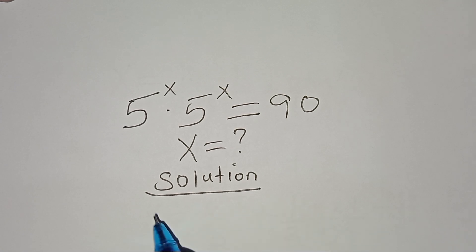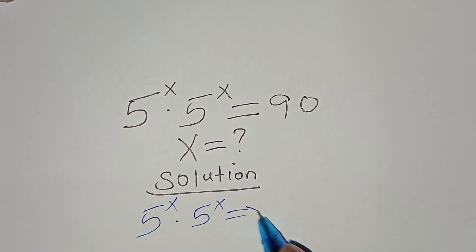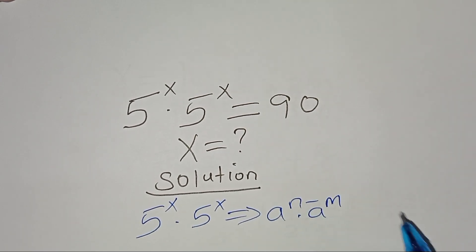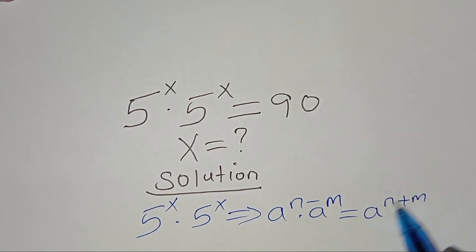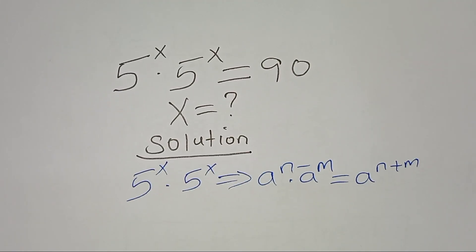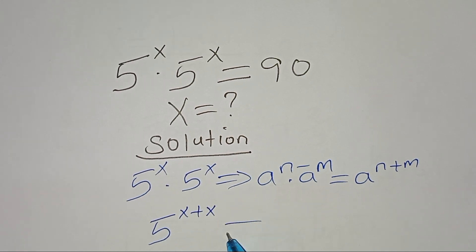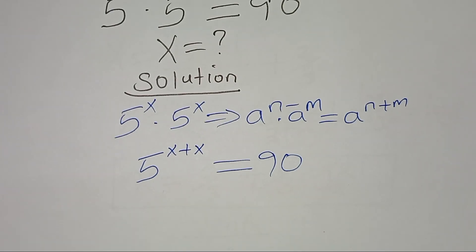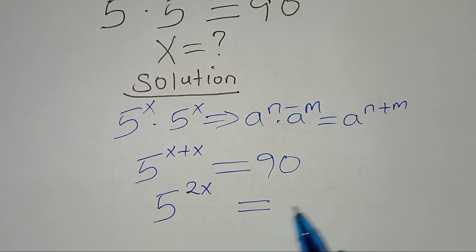Now, for the solution: 5 to the power x times 5 to the power x is in the form of a to the power n multiplied by a to the power m, which you can express as a to the power n plus m. Applying this exponent property, we can express this as 5 to the power x plus x, which is equal to 90.